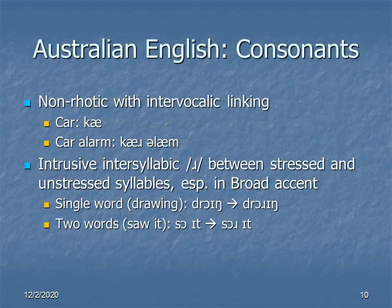And that's the vowels. When we move to consonants, the first thing we should probably say is that Australian and Southern Hemisphere English generally is non-rhotic in pretty much the same way that received pronunciation is non-rhotic, including the use of intervocalic linking. So, for example, whereas a Canadian would say A CAR, someone using received pronunciation would say A CAH.